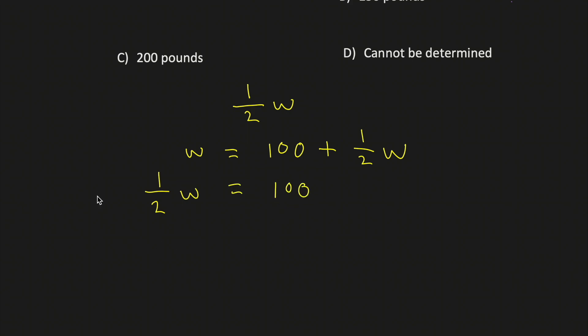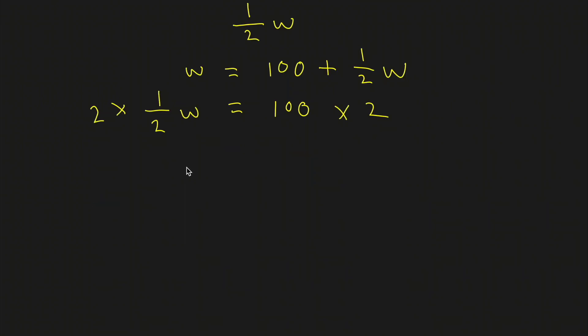Next, we'll multiply both sides of the equation by 2. On the left, we get W. And on the right, we get 200.